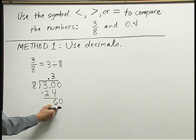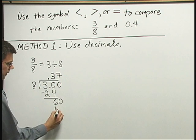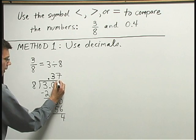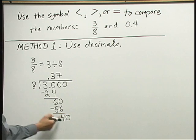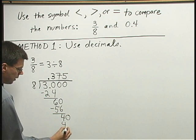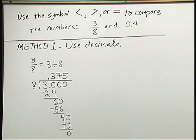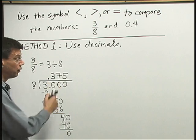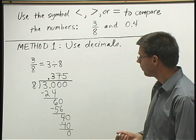8 goes into 60 seven times. 7 times 8 is 56. 60 minus 56 is 4. I can add another 0 on, and bring it down, 8 goes into 40 five times, 5 times 8 is 40, subtract, I get 0 remainder, so now I can see that I have a decimal of 0.375 for 3 eighths.